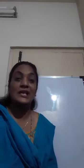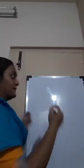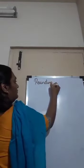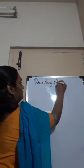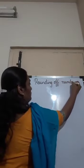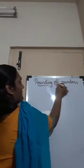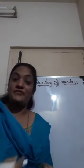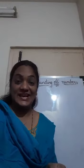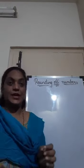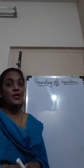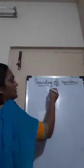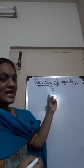So today our topic is rounding of numbers. In real life we round off numbers to make our calculations easier and faster. Rounding off — the word itself is telling something. Rounding off means round. You have to round something. Round means circle.